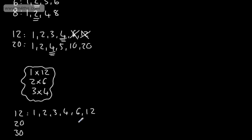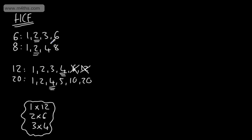6 doesn't go into 20, so that's not going to be the highest common factor. It does go into 30, but it needs to go into all of them. 4 goes into 20, but it doesn't go into 30 without a remainder. 3 doesn't go into 20, so we're down to 2. Does 2 go into 20? Yes. Does 2 go into 30? Yes. So the highest common factor of 12, 20, and 30 is 2.